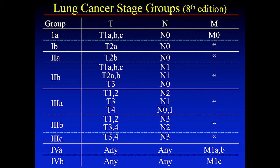Stage 1A is T1 N0; stage 1B is T2a N0; stage 2A is T2b N0; stage 2B is T3 N0 but mostly T1 and T2 N1. Stage 3 is divided into 3A, 3B, and 3C — where 3C represents T3 and T4 tumors with N3 disease, representing a lot of locally advanced disease.